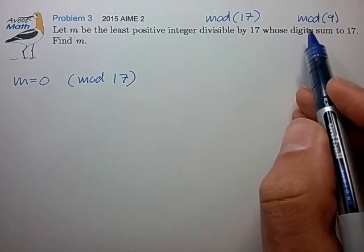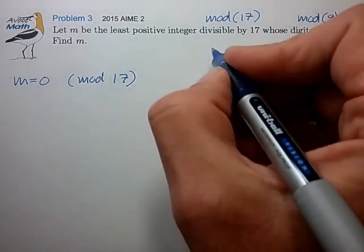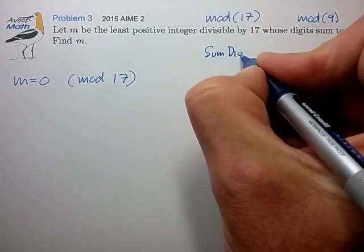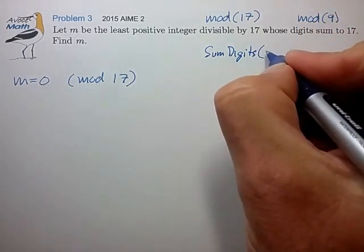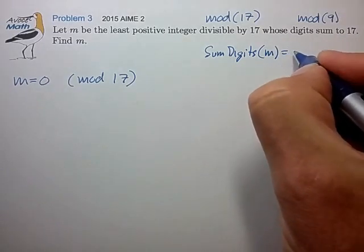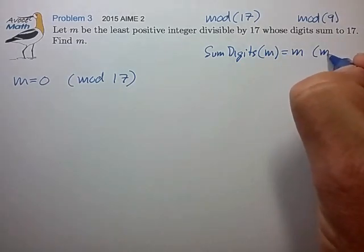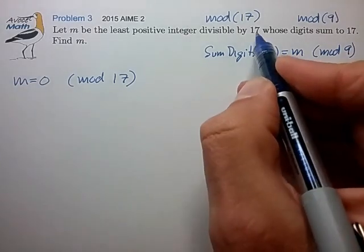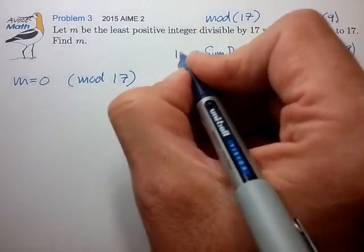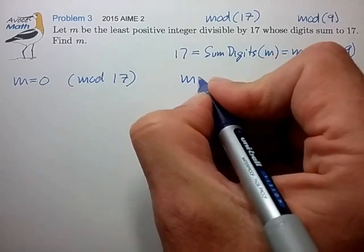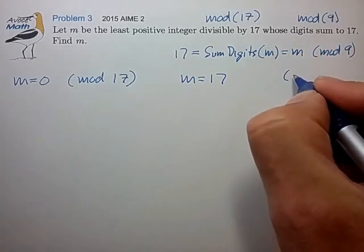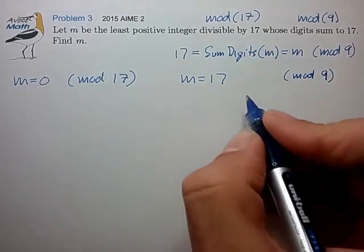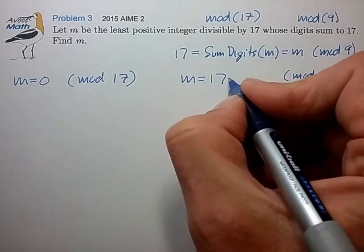Now in mod 9, we know from the previous video that the sum of digits of a number m is just equal to m in mod 9. We know that the sum of digits is 17, so we know then that m is equal to 17 in mod 9, and we can reduce that to the principal residue of 8.